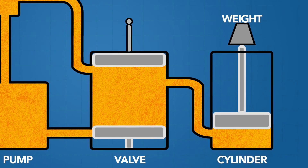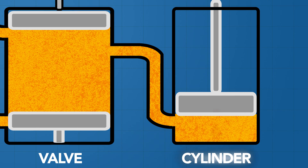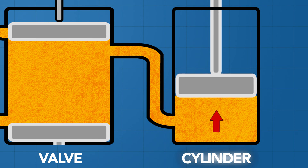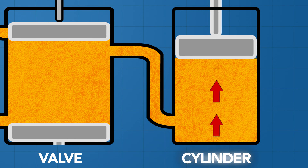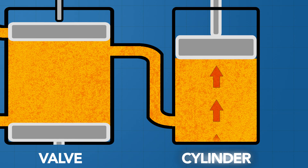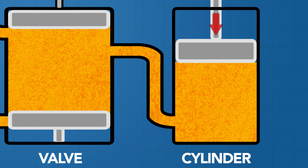The cylinder is the slave of the system. It extends or contracts depending on what side of the piston the pressure is applied to.